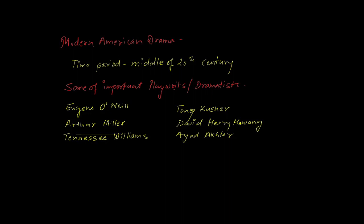The time period of modern American drama was the middle of the 20th century. Some important playwrights or dramatists of modern American drama are: Eugene O'Neill, Arthur Miller, Tennessee Williams, Tony Kushner, David Henry Hwang, and Amiri Baraka.